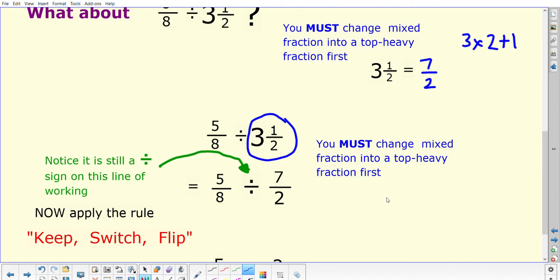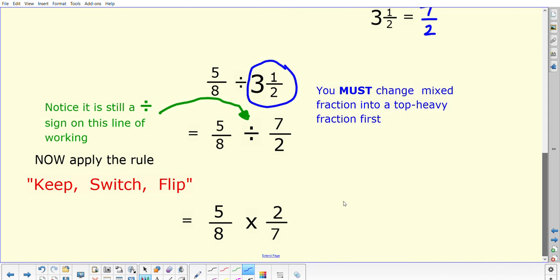So once we've done that, notice that we've still got this divide sign going on. We're not flipping anything over until it looks like we've got two fractions side by side. So now it looks the same as what we were doing before, we don't have any complications with whole numbers, so now we're going to apply the keep, switch, flip rule. So we can write down the 5 over 8, that's our keep. We change the divide to times, and we flip over. It's the 7 over 2 that gets flipped.